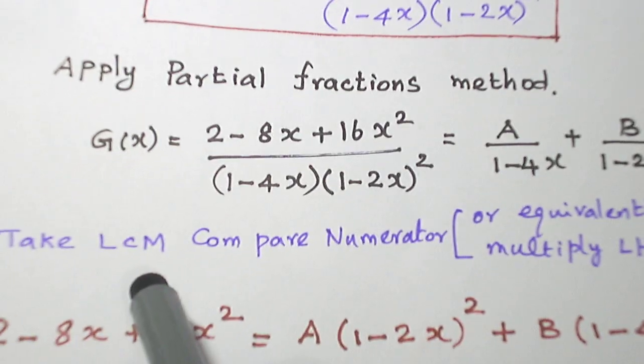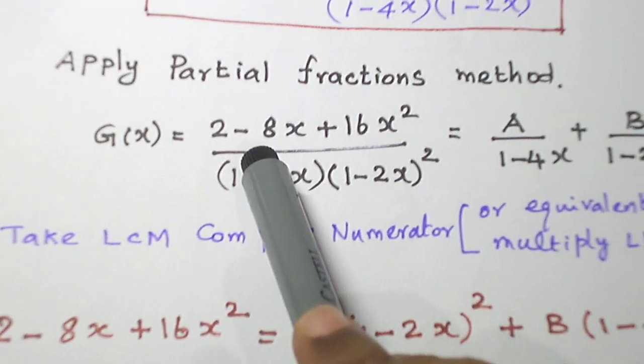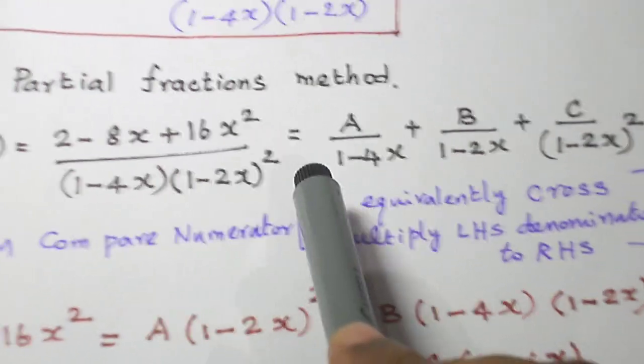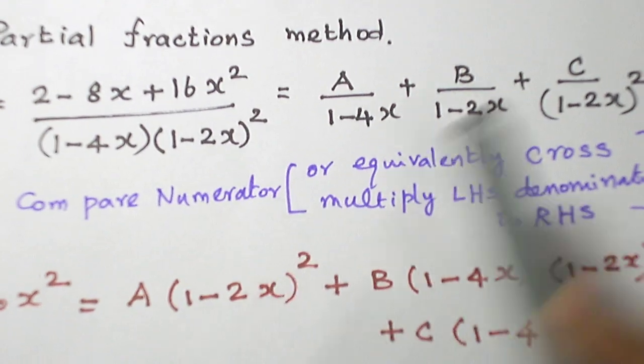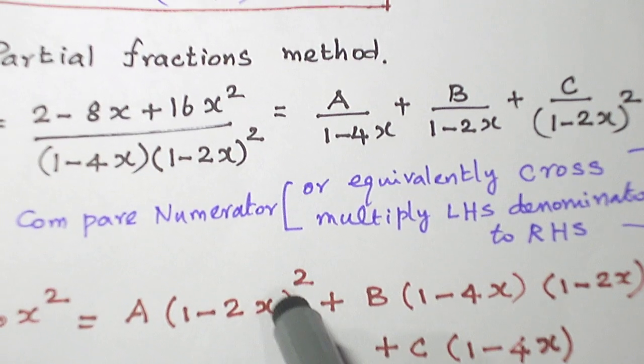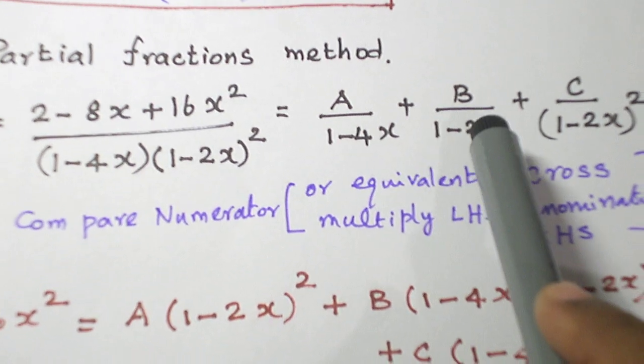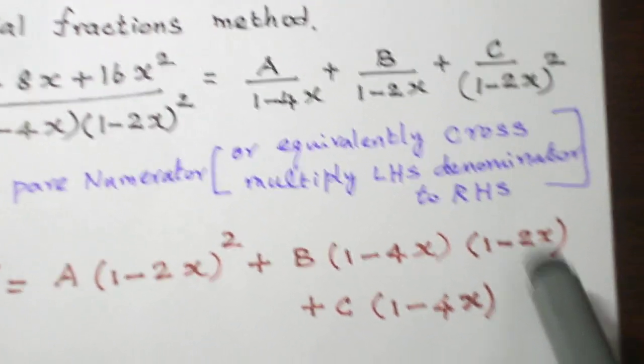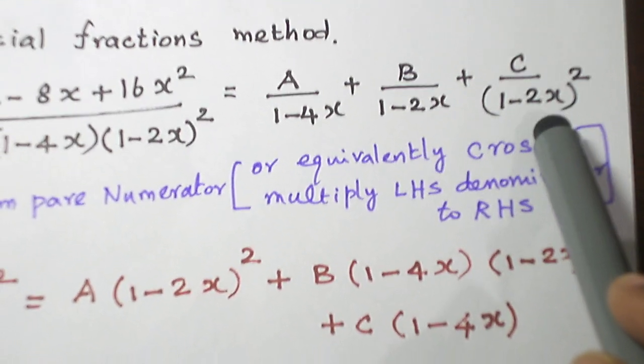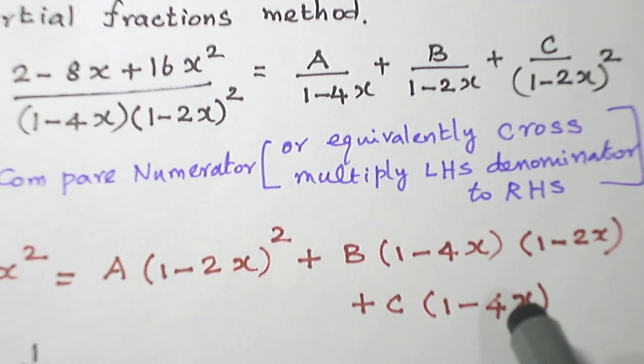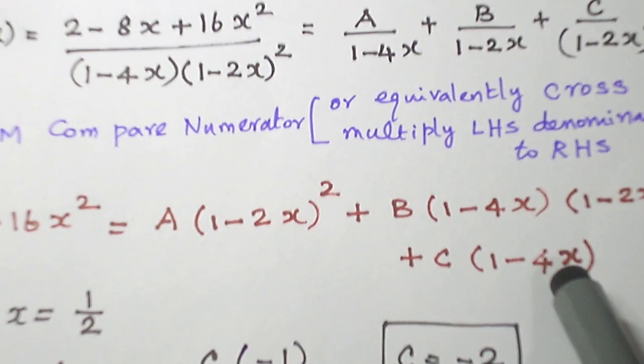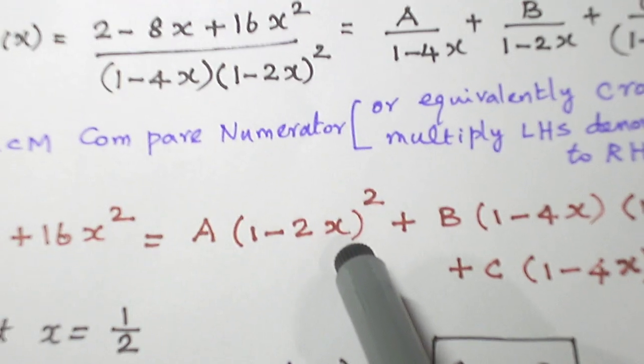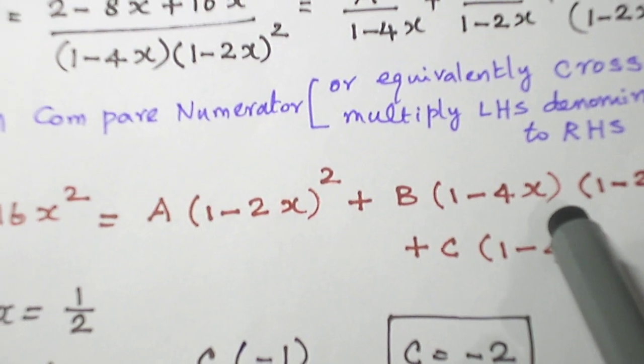So, take LCM and compare the numerator. The numerator on the left hand side is 2 - 8x + 16x^2. When we take LCM, A into that (1-2x)^2 is missing. Plus (1-2x) and (1-4x) is missing. Write it here. Plus C into (1-4x) is missing. Write it here.